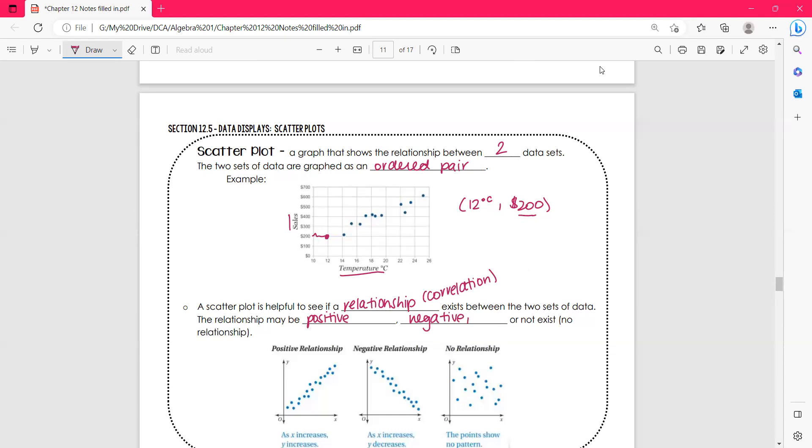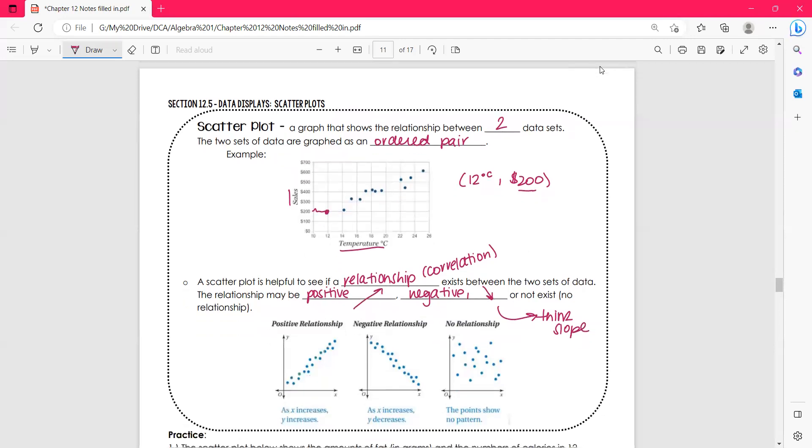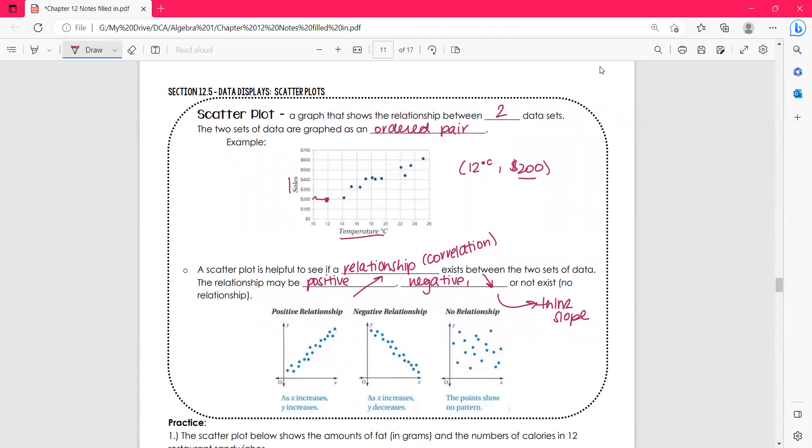When we say positive and negative, we want to think slope. Positive, I want you to think about going uphill. And negative, I want you to think about going downhill. And so here's a visual of that. I want you to think if there was like a little man and we always go left to right. So if there's a little man walking from the left to the right, is he going uphill? Then it's a positive relationship. Is he going downhill? Then it's a negative relationship. Or there's no relationship if it's just craziness, right?